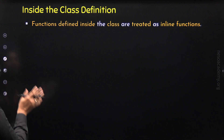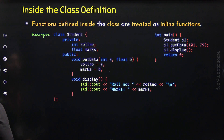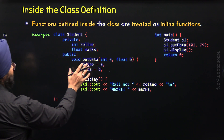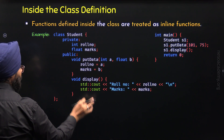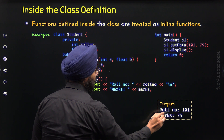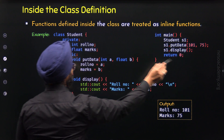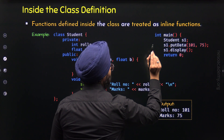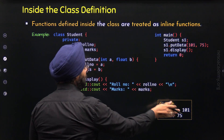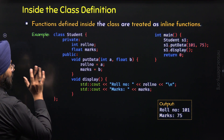Here is the example program demonstrating how to define member functions putData and display within the student class. I have defined these two functions just like normal functions directly inside the class, and they are treated as inline functions. The code is the same. When we execute this program, we will get the output: role number 101 and marks 75. With the S1 object, we call putData passing the values indirectly, and then call display. The program works exactly the same, but here the functions are defined inside the class — that is the difference.